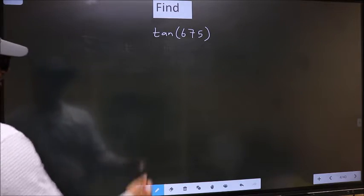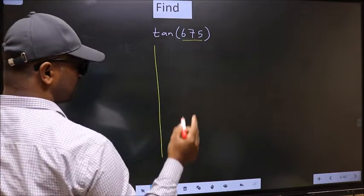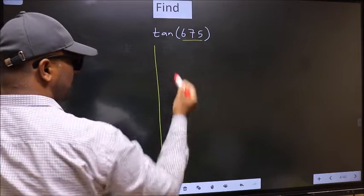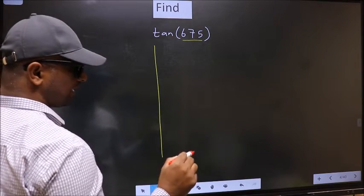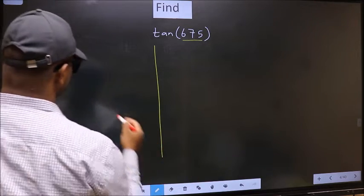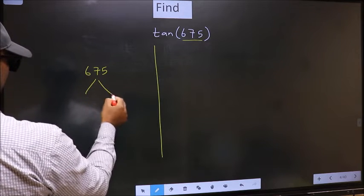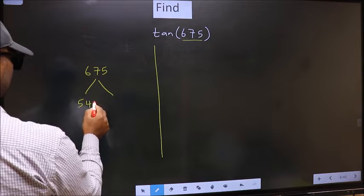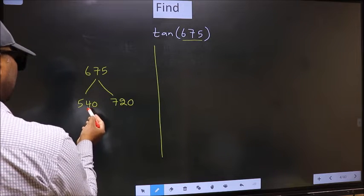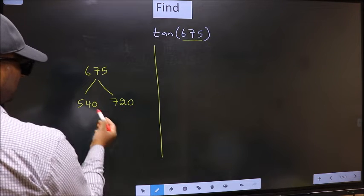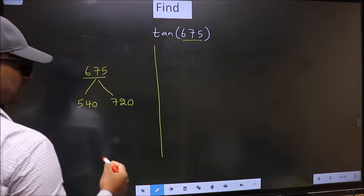Here we have 675. Now we should check 675 lies between which two multiples of 180. What I mean is, 675 lies between 540 and 720. This is 180 into 3. This is 180 into 4. Between these two numbers, 675 lies.